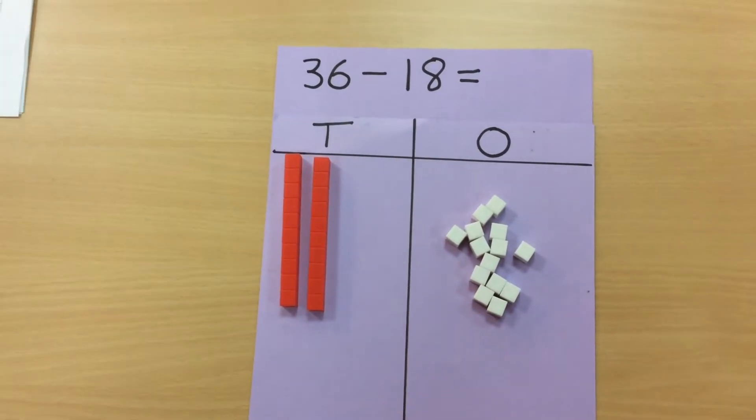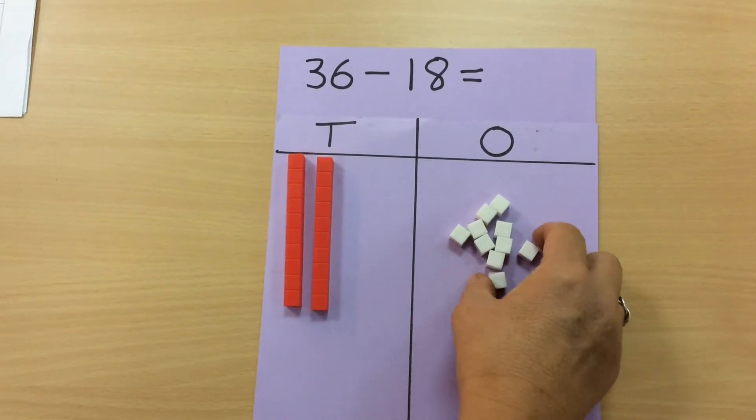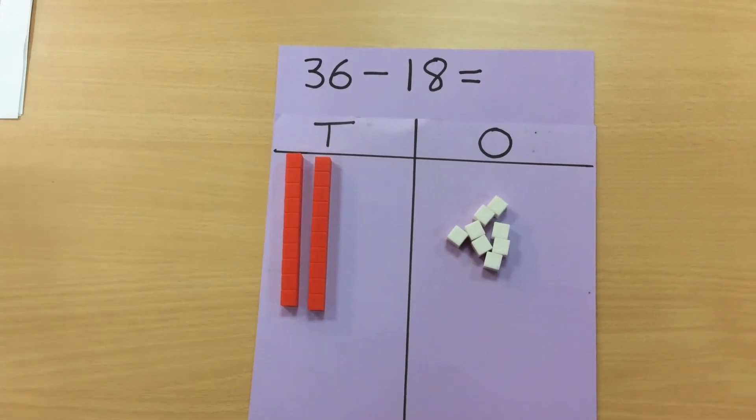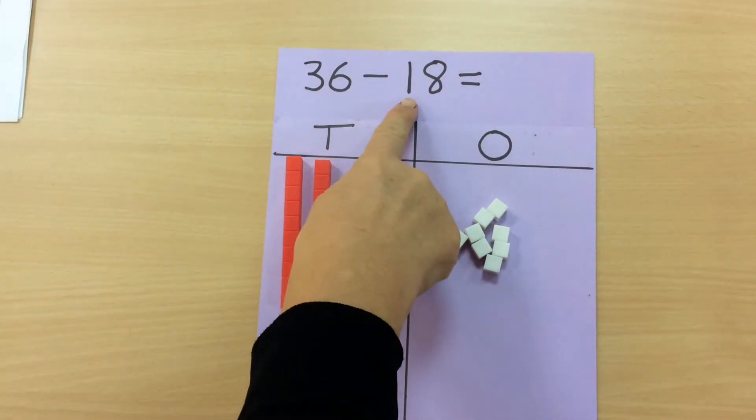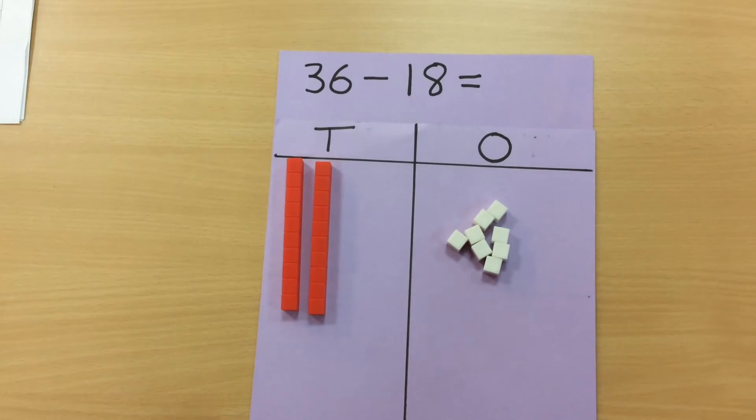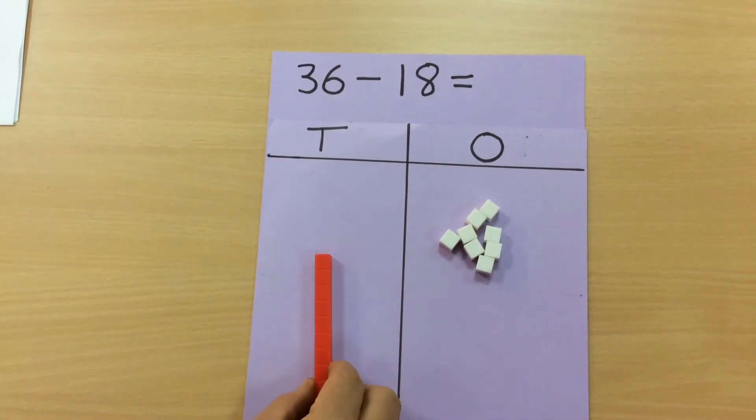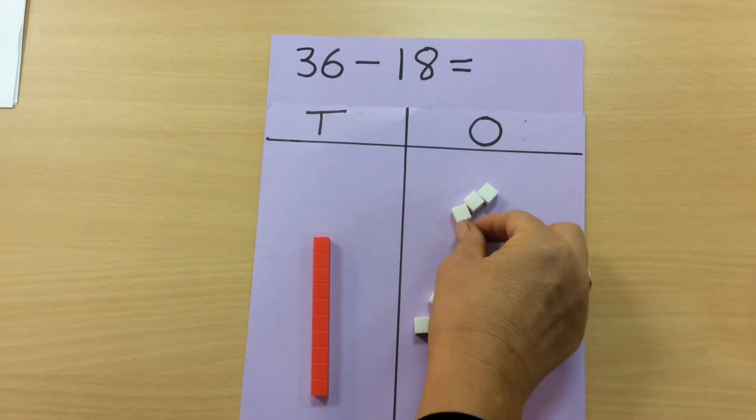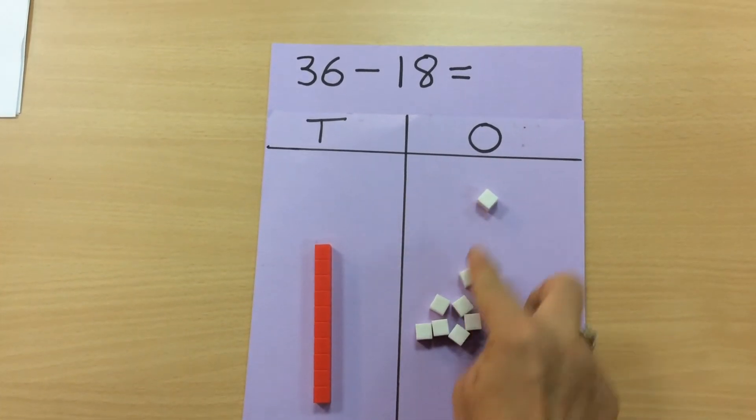So that's two, four, six, eight - they've moved the eight ones away. And now they still need to take away the one ten, which leaves them with ten, eleven, twelve, thirteen, fourteen, fifteen, sixteen, seventeen eighteen.